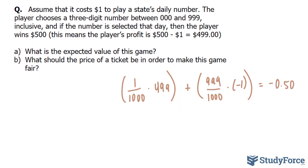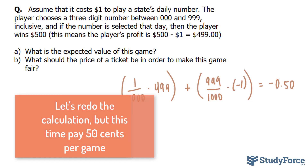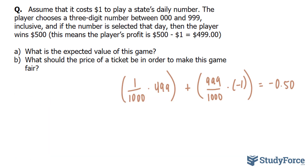So how do we make this a fair game and change the price of the ticket? We already know why the lottery maker does this — it's to make a profit obviously. From part A, we see that if we pay a dollar to play the game, we can expect to lose 50 cents per game on average. Therefore, we should pay 50 cents less to make the game fair. We can verify this as follows: assume that you pay $0.50 to play the game, and as before you are paid $500 to win and nothing if you lose.